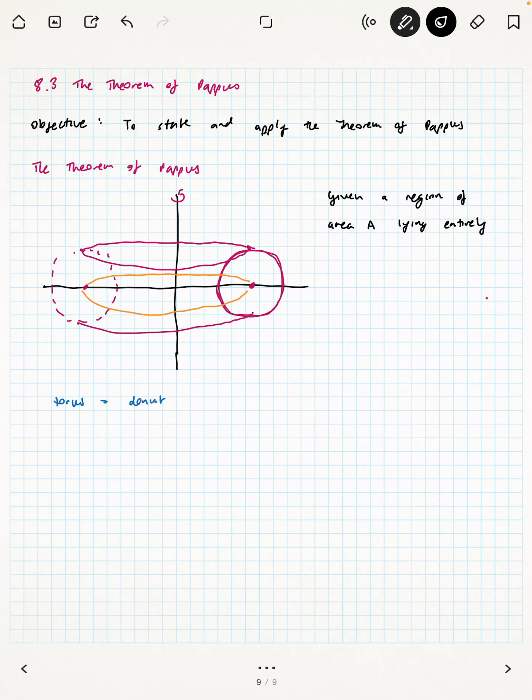So given a region of area A lying entirely on one side of an axis, the volume of the solid of revolution is the product of the area A by the distance traveled by the centroid.